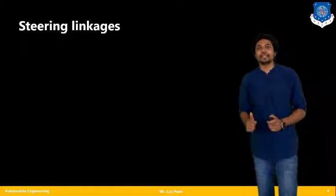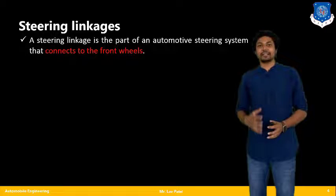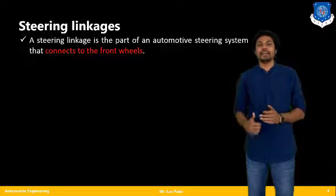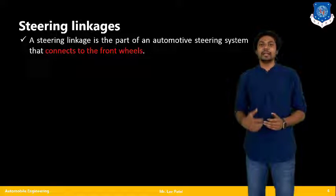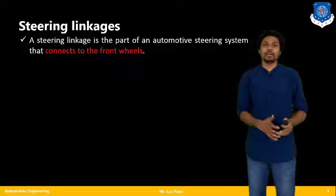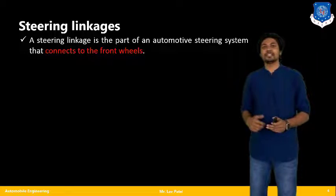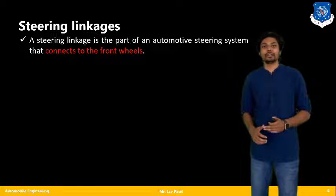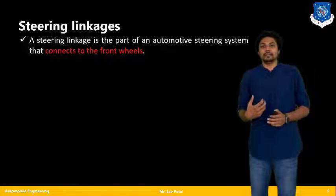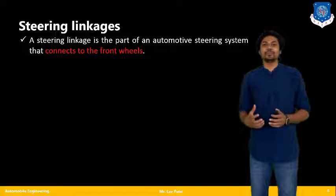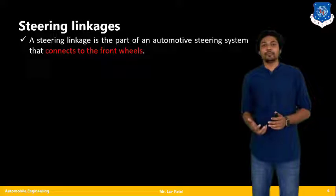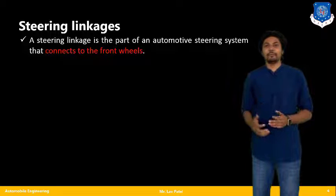So let us begin with the first topic, that is steering linkages. We all know there are several mechanical linkages that are bound together to make one steering mechanism, ultimately turning my overall vehicle to the left or right direction. Basically, steering linkages are the part of an automotive steering system that connects to the front wheels. We give inputs to the front wheels, and according to that the vehicle travels, while the rear wheels simply follow the front wheels.